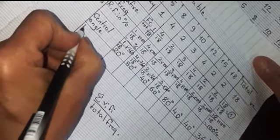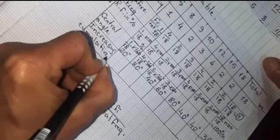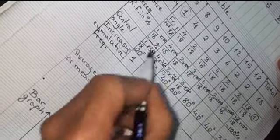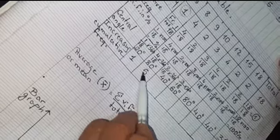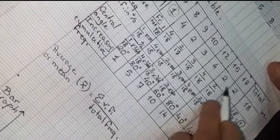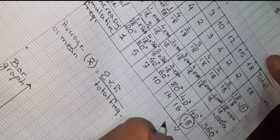I'll add one thing: increasing cumulative frequency. I drop the first frequency, which is 1, and write it. Then I add each frequency with the next: 1 + 4 = 5, then 5 + 2 = 7, then 7 + 3 = 10, then 10 + 4 = 14, then 14 + 2 = 16, then 16 + 2 = 18. The last cumulative frequency equals the total frequency.